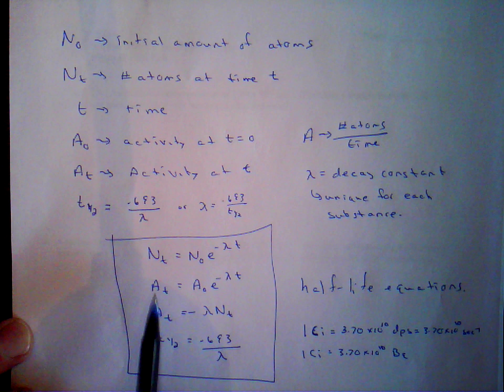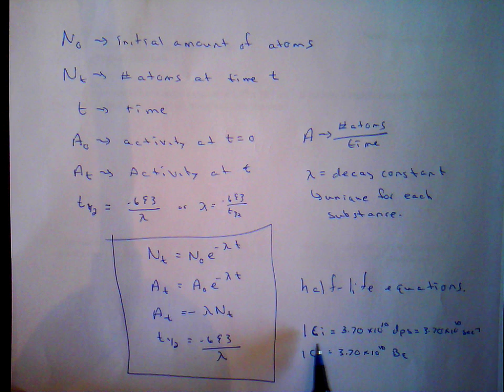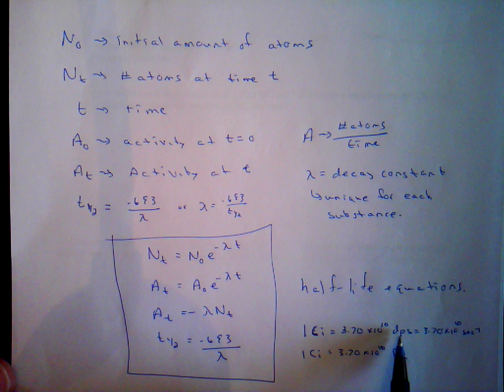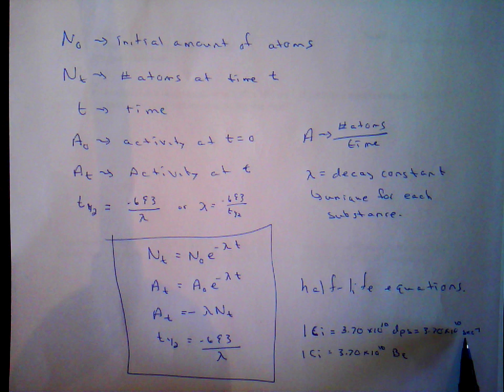Something else you should add is that the units for decay rate are curies, or decays per second, or Becquerels. One curie is the same as 3.7 times 10 to the 10th decays per second, which is the same as 3.70 times 10 to the 10th seconds to the minus 1. A Becquerel is the same as one decay per second.